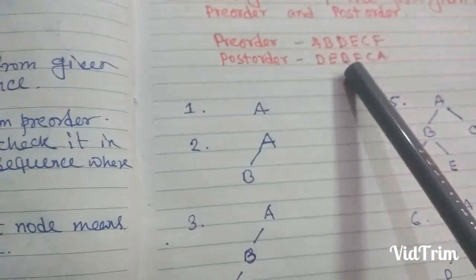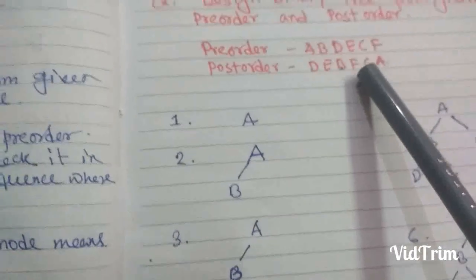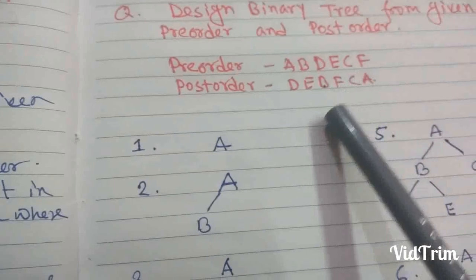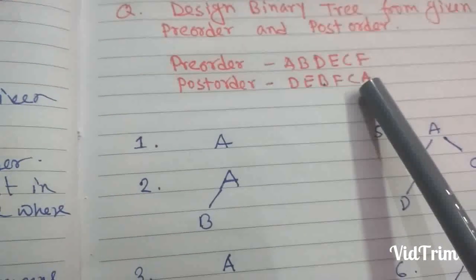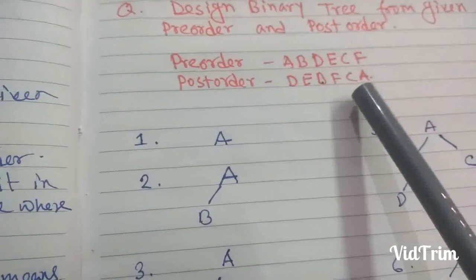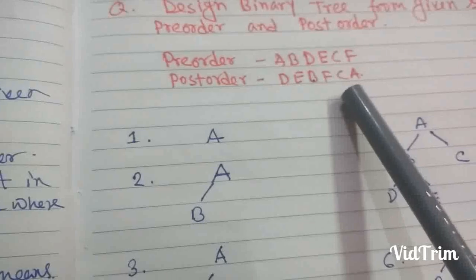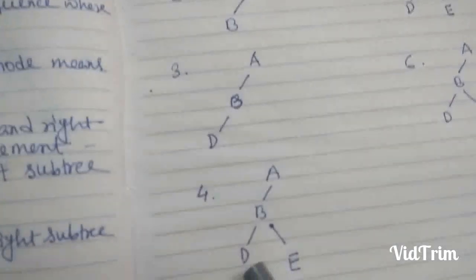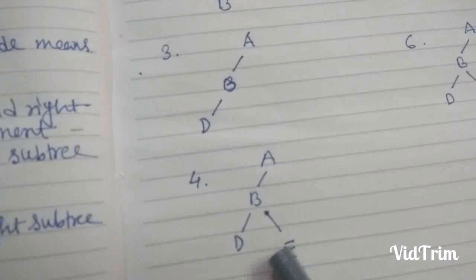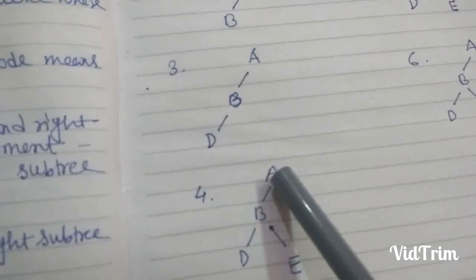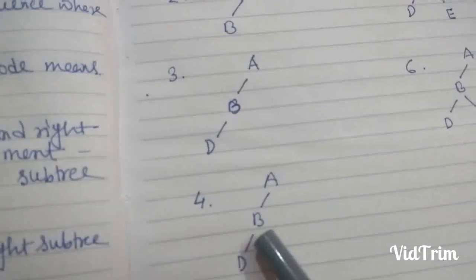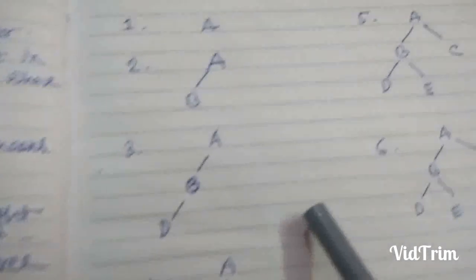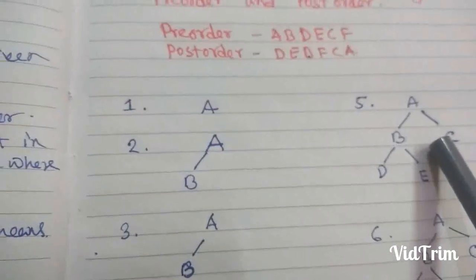The next element is C. C appears before A in the post-order sequence, so C is a part of A. However, A already has a left subtree, so we place C in the right subtree of A.